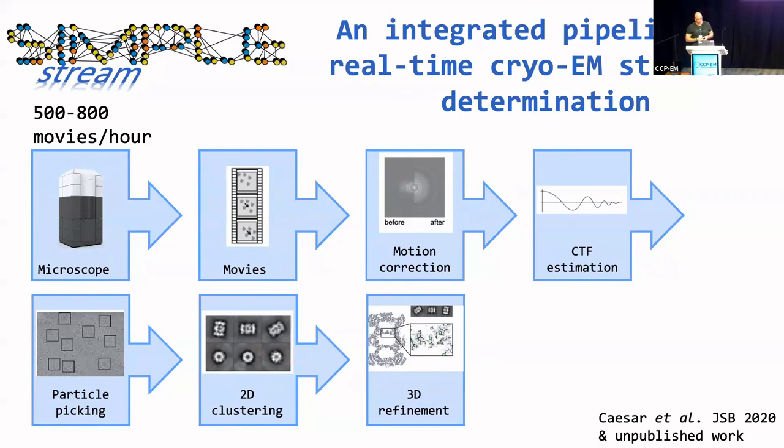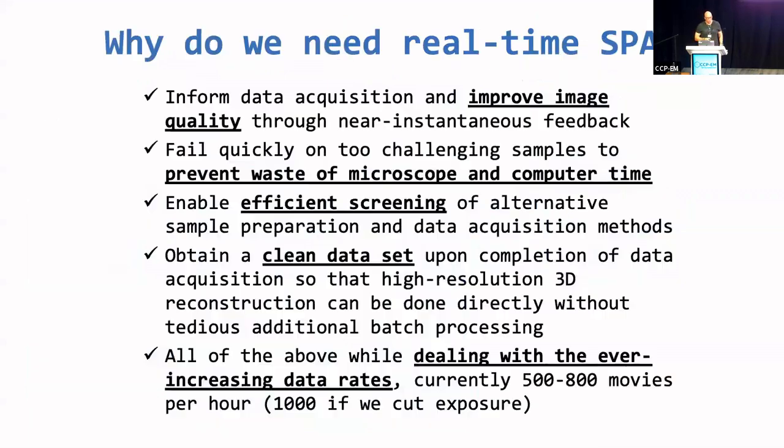And then importantly for streaming is that we start to do single particle averaging, because that's the only way that we can validate that the data is really useful quality in terms of averaging. Optical quality we can look at via the Thon ring range, but we have to start averaging if we're going to provide solid validation in real time.